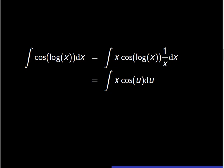So we replace log of x by u and 1 over x dx by du, and obtain the new expression of this integral as the integral of x times cosine of u du. This suggests that we have to replace x by its expression in terms of u. Since x is exponential of u, we have the new expression as the integral of exponential of u times cosine of u du.